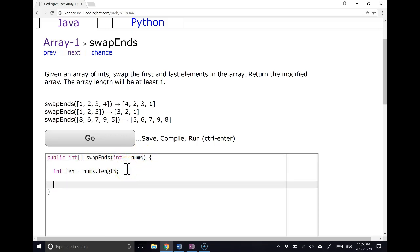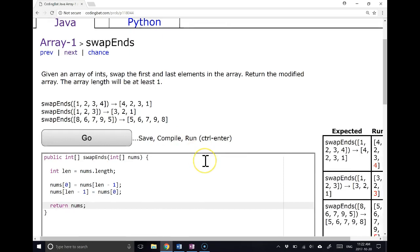And then all I'm going to do is say nums at 0 is equal to nums at length minus 1. Nums at length minus 1 is equal to nums at 0. And then I return nums. And this is going to work. But when I run it, it doesn't.